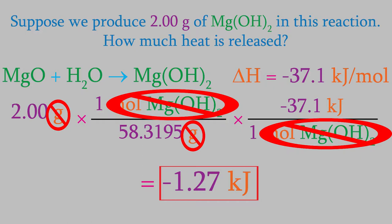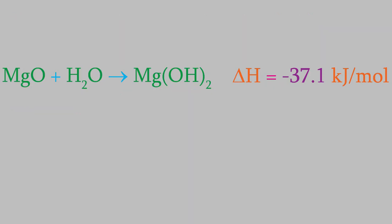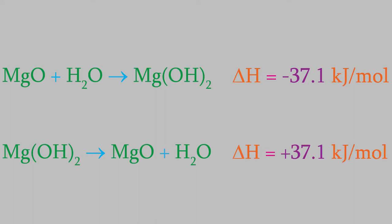There's another thing to know about the enthalpies of reactions like this. If we were to run this reaction in reverse, it would absorb energy instead of releasing it. In other words, if we were to start with magnesium hydroxide and get magnesium oxide and water as the products, the enthalpy of the reaction would be positive 37.1 kilojoules, not negative. That would make this an endothermic reaction instead of an exothermic one. The important thing to notice is that the enthalpy of this reaction is the same number as the reverse reaction, it's just that the sign has changed.